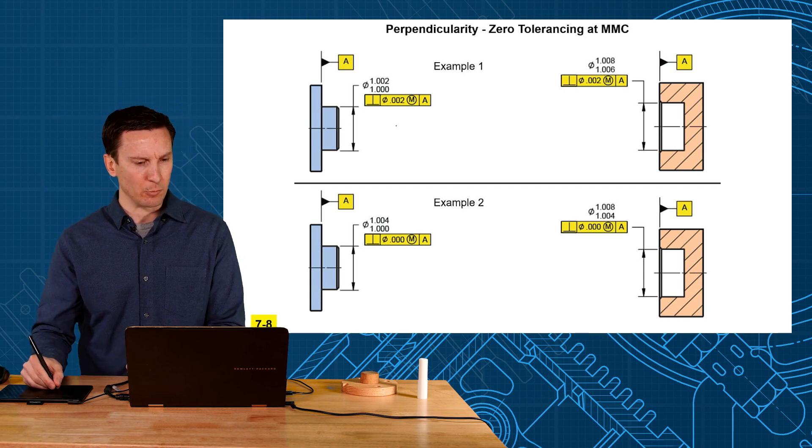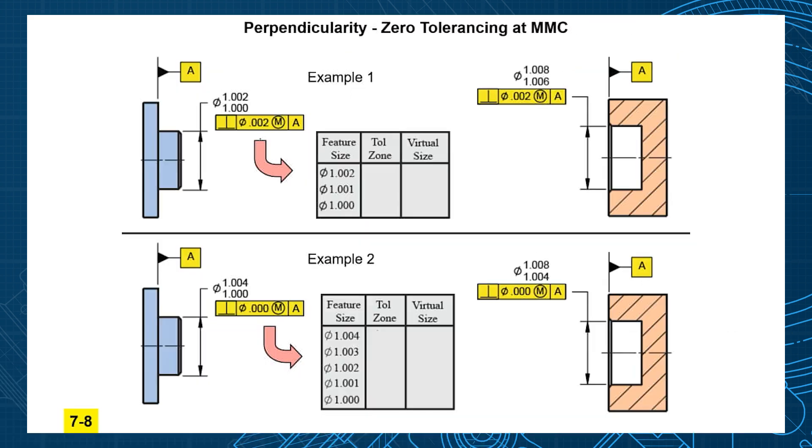Well let's analyze the top one. The top one, you have a size of MMC, which is one inch two, and that's where you get the two thou perpendicularity. Now as the pin gets smaller, then you get bonus tolerance. You would get three, and then you would get four. So notice that this pin plus two, or this pin plus three, or this pin plus four, would all give you that virtual condition one inch four.